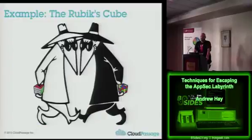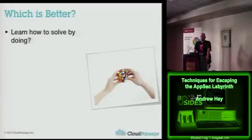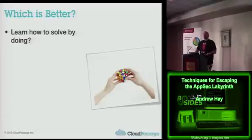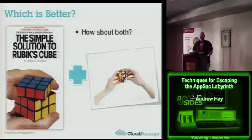Another example: if you were given a Rubik's cube and told to solve it, you could be given a book on how to solve a Rubik's cube, or you could learn by doing — actually picking it up and fumbling around until you figure out the methodology. But what's probably better is having both: the map and the instructions on how to solve the Rubik's cube, plus the practical hands-on knowledge to actually follow those instructions.